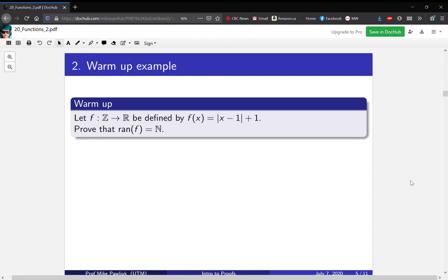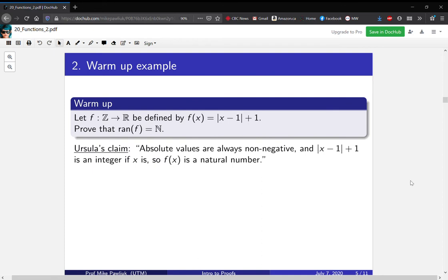So let f : Z → R be defined by f(x) = |x - 1| + 1. And our goal is to prove that the range is equal to the naturals. Students often will claim the following. So let's say a student Ursula claims this: Absolute values are always non-negative, and |x - 1| + 1 is an integer if x is. So therefore, f(x) is a natural number.